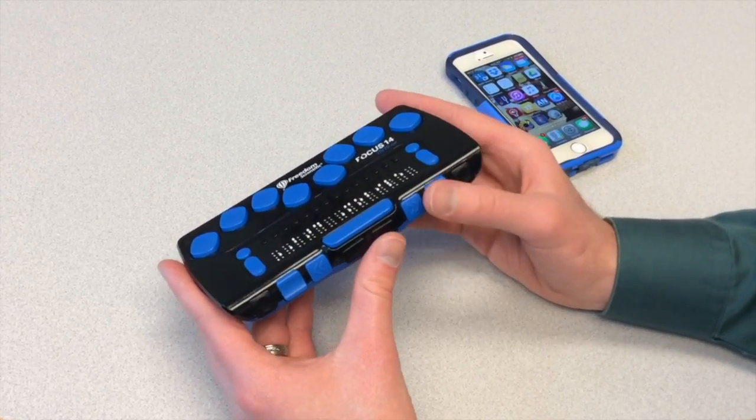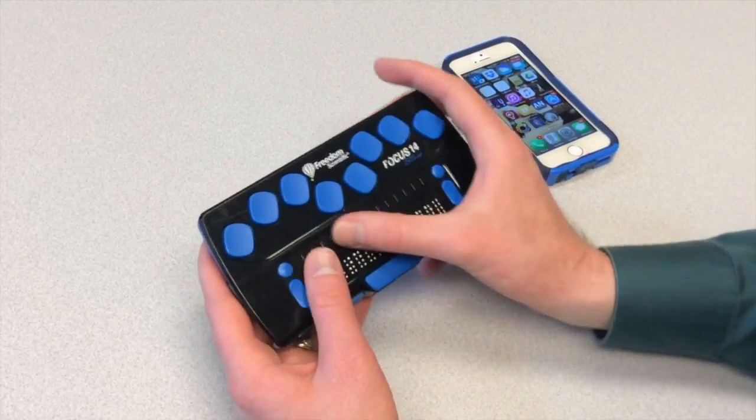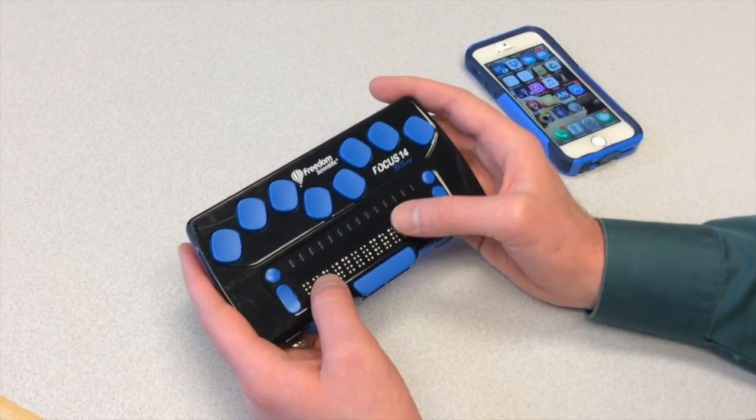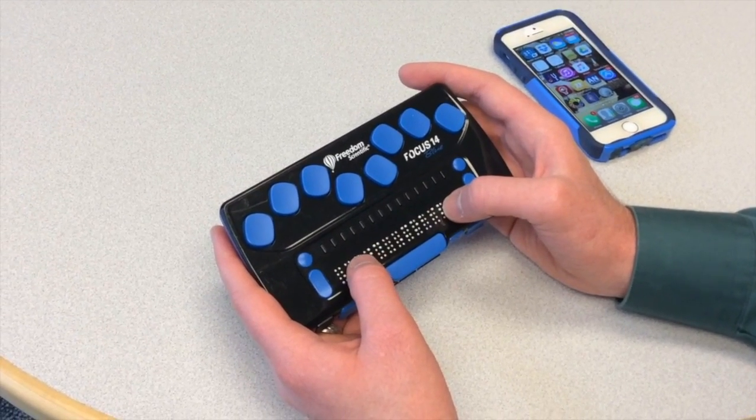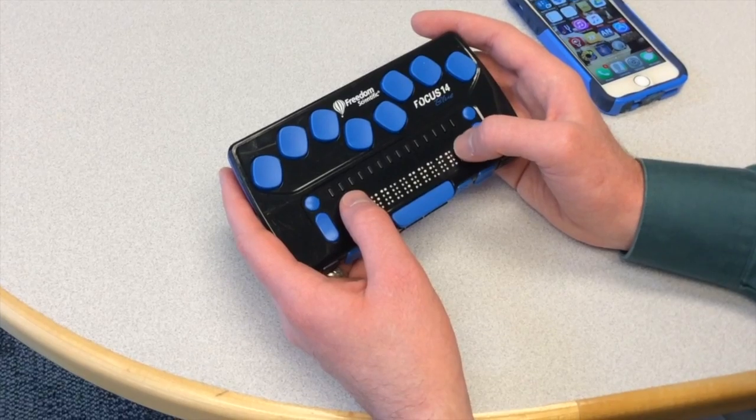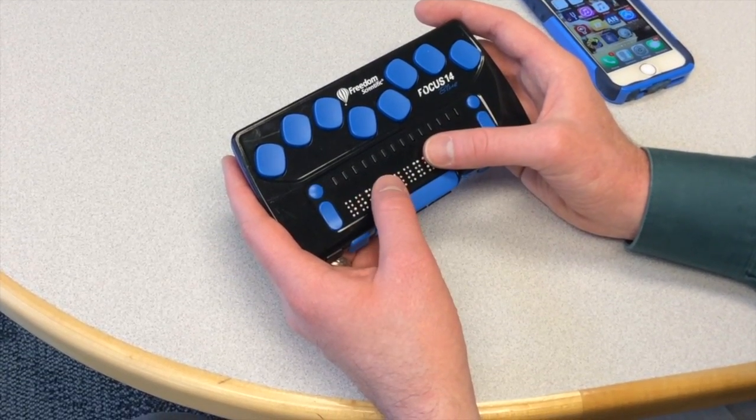And again, these rotor buttons right above the Braille display are very useful. It acts as a double tap to activate an item. So go ahead and have fun and experiment with all sorts of keystrokes to navigate your iPhone.